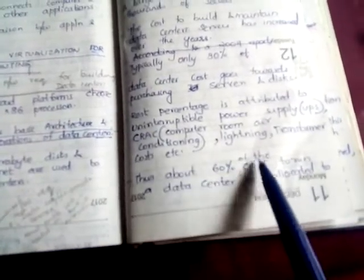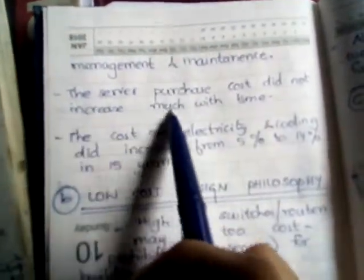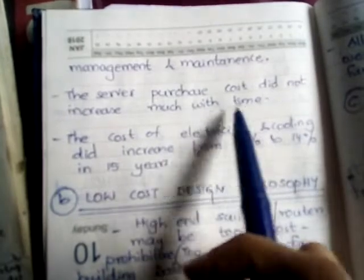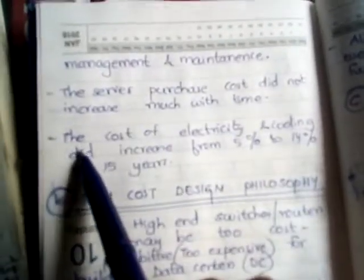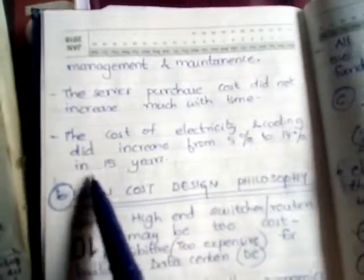About 60 percent of the cost to run a data center is allocated to management and maintenance. Server purchase costs did not increase much with time, but the cost of electricity and cooling increased from 5 percent to 14 percent in 15 years.